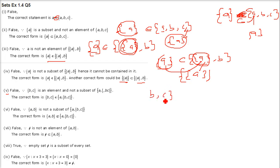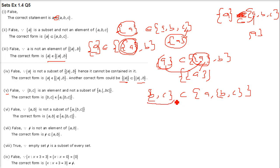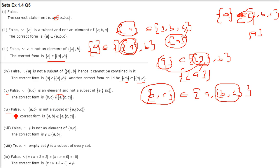Fifth: {b, c} ⊆ {a, {b, c}}. Here {b, c} is an element inside this set. So it belongs — {b, c} ∈ {a, {b, c}} is the correct form, not subset.